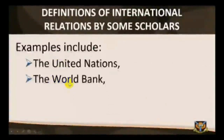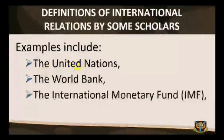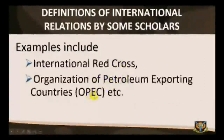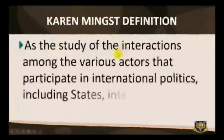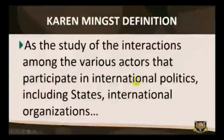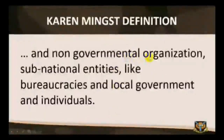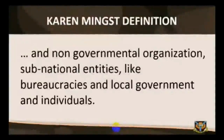Examples include the United Nations, the World Bank, the International Monetary Fund (IMF), International Red Cross, and the Organization of Petroleum Exporting Countries (OPEC). The problem of parochialism in Brown's concept is taken care of by Karen Mists, who defines international relations as a study of the interactions among the various actors that participate in international politics, including states, international organizations, non-governmental organizations, subnational entities like bureaucracies and local governments, and individuals.